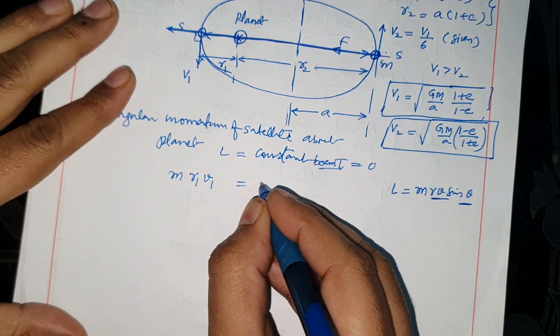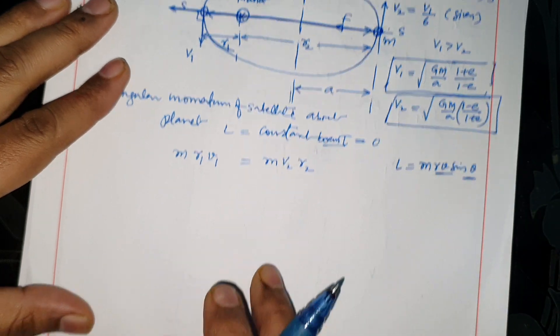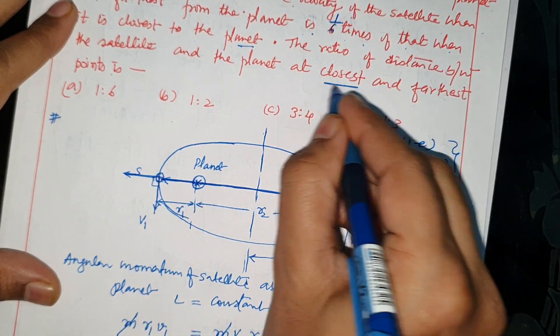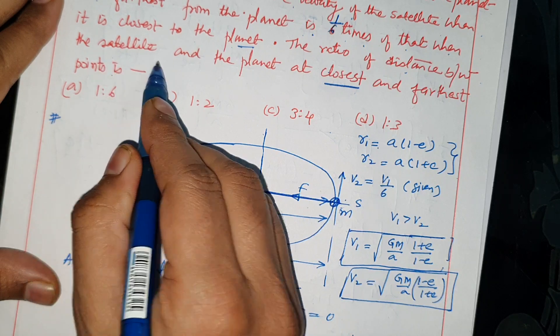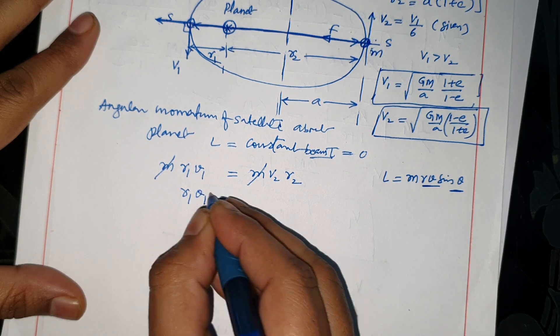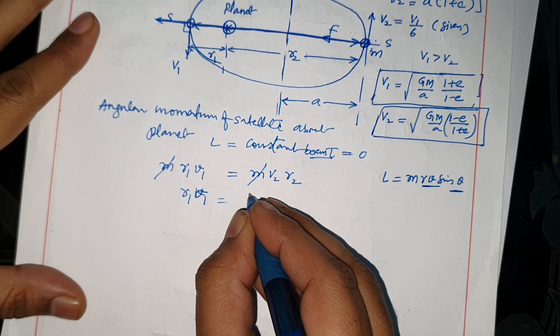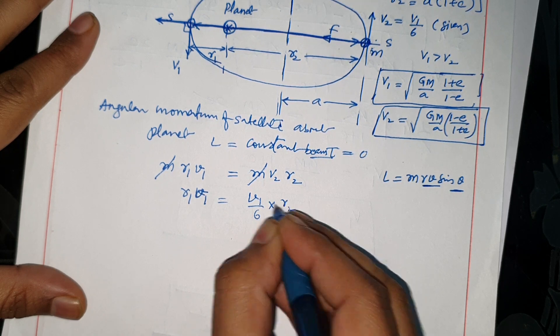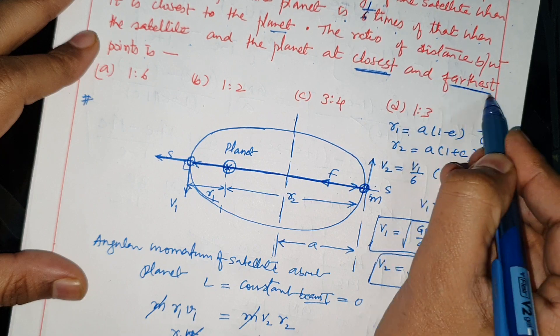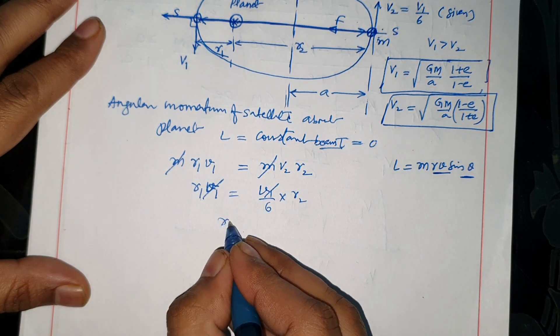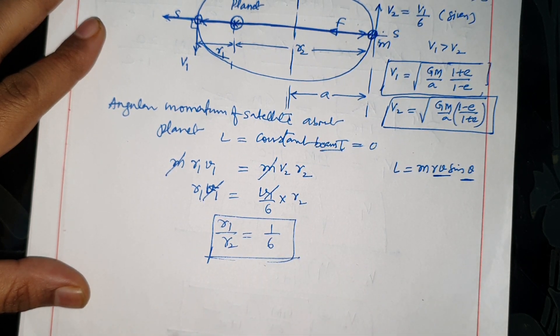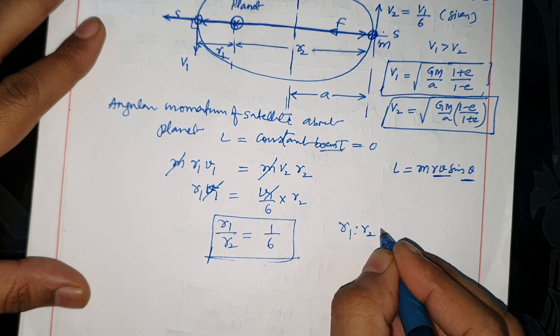Sin 90 is 1, equals M V2 R2. M gets cancelled. Closest distance between the satellite and furthest. R1 V1 equals V2 R2. V1 is 1 by 6 V2. V cancels. The ratio R1 by R2 is equal to 1 by 6.